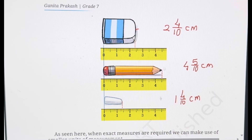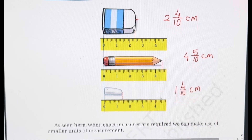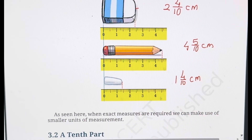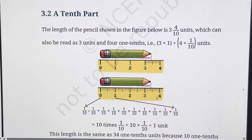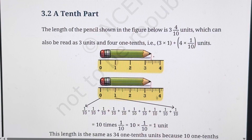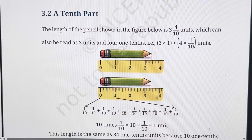Where exact measures are required, we can use smaller units of measurement. A tenth part — the length of the pencil shown below is 3 whole and the 4th line, so 3 whole 4 upon 10. That is 3 complete units and 4 times 1 tenth. So 4 into 1 tenth means out of 10, the 4 parts. If you observe the smaller parts: between 0 and 1 there are 10 parts, it is 10 times 1 upon 10.